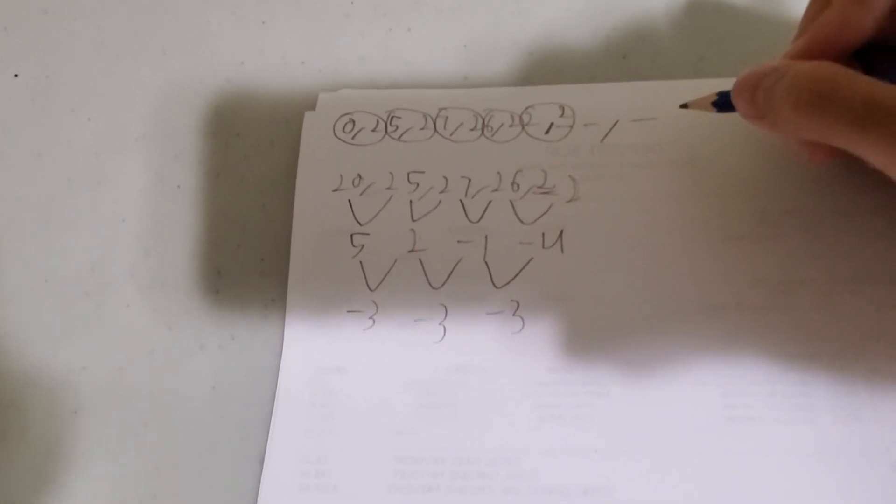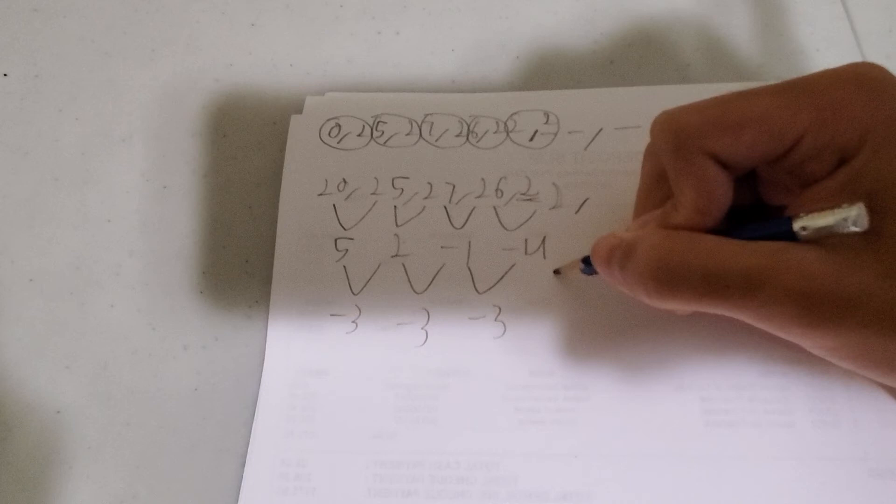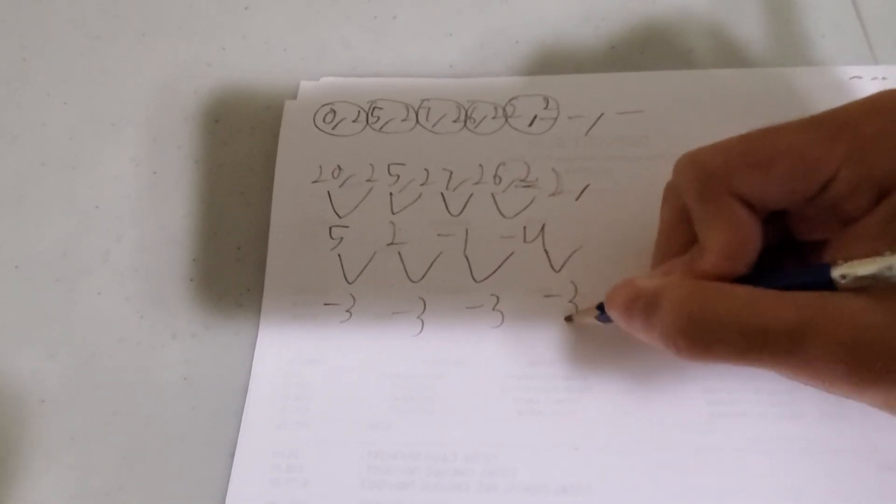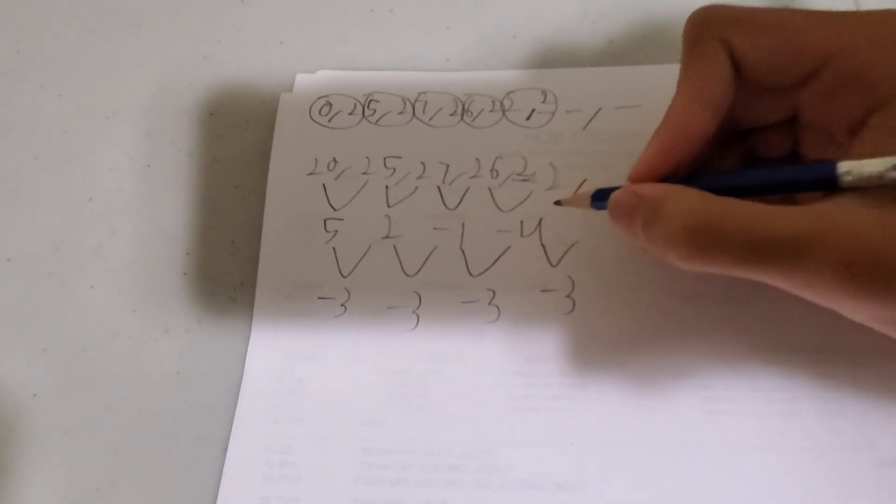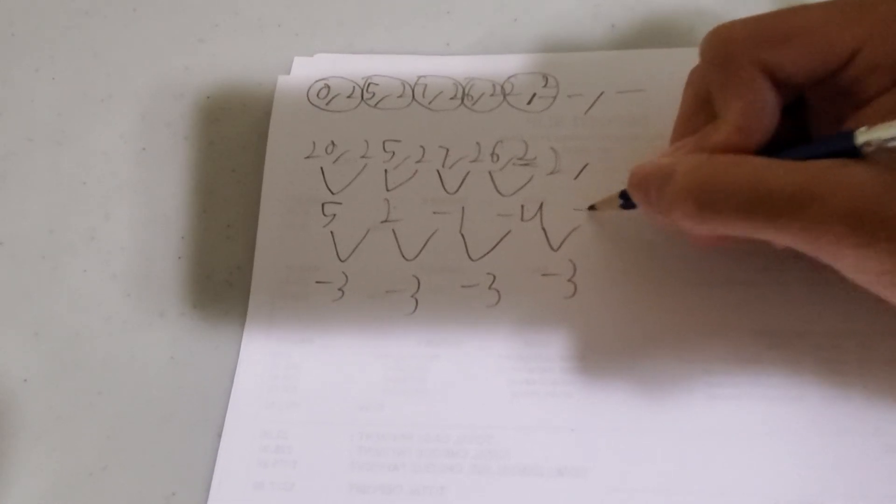Alright. So now let's continue the sequence. So it has to be another minus 3, because it's the same for the second differences. Minus 4 minus 3 is minus 7.